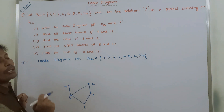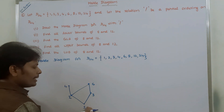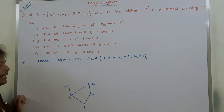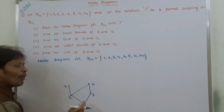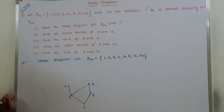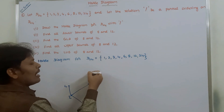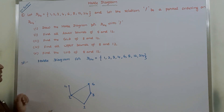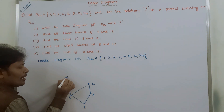Similarly, 1 divides 2 and 2 divides 6, therefore 1 divides 6 according to the transitive property, so no direct edge is drawn. For element 8: 2 divides 4 and 4 divides 8, so we draw an edge between 4 and 8. Since 2 divides 4 and 4 divides 8, automatically 2 divides 8 by the transitive property.